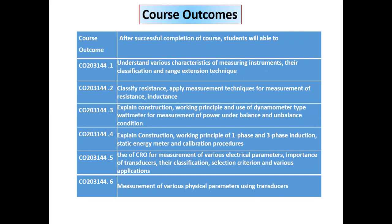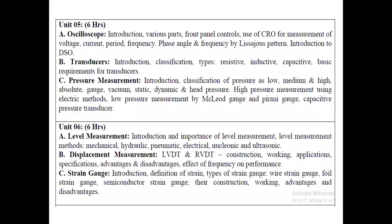In the course outcomes of Electrical Measurement and Instrumentation, there are six course outcomes. Out of those, the units on oscilloscope and transducers satisfy the fifth course outcome, that is the use of CRO for measurement of various electrical parameters, the importance of transducers, their classification, selection criteria, and various applications. These course outcomes will be fulfilled by this unit, that is Unit 5: Oscilloscope and Transducers.